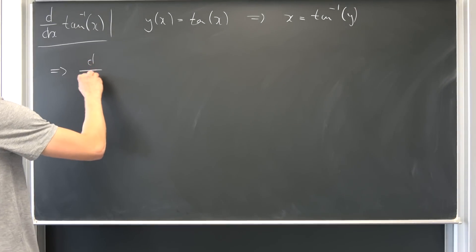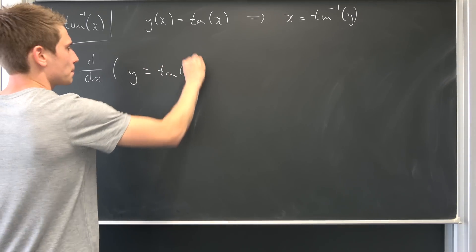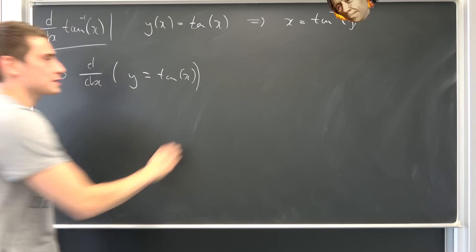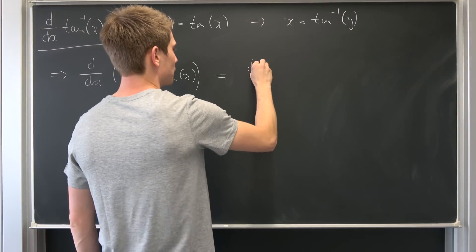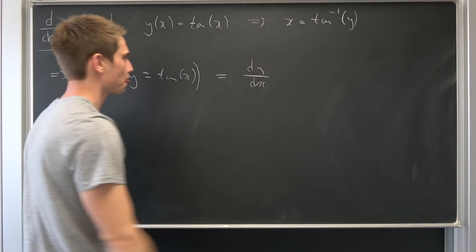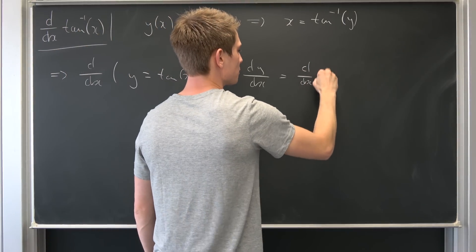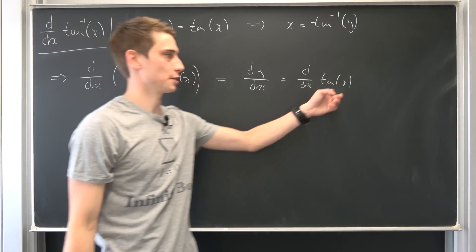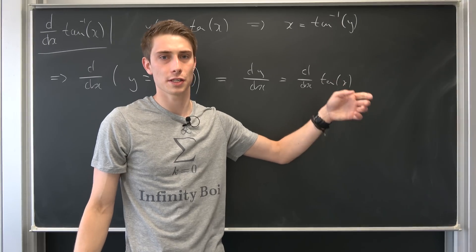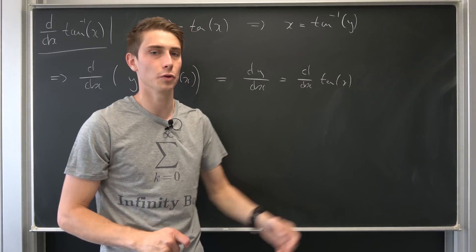So what we want to do, we want to find d dx of y being equal to tangent of x. Well, on the left hand side, we are going to end up with dy dx. And this is now equal to d dx of tangent of x. And you can just turn this into sine times the cosine to negative one, one over cosine, and then differentiate it using the product rule or quotient rule.